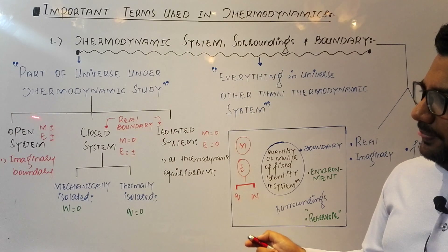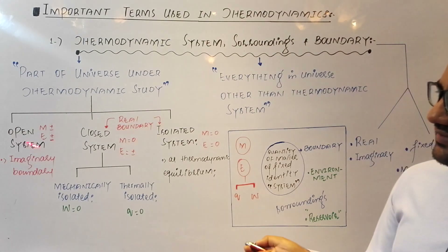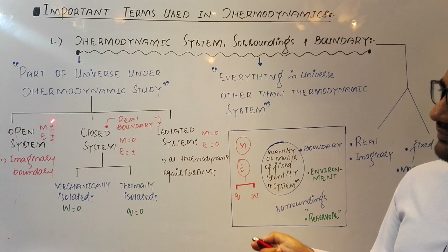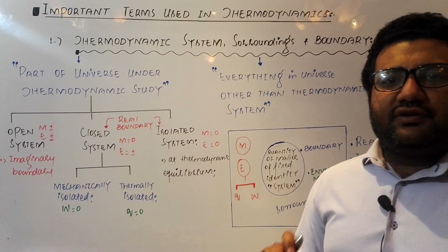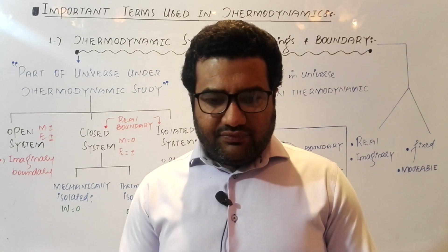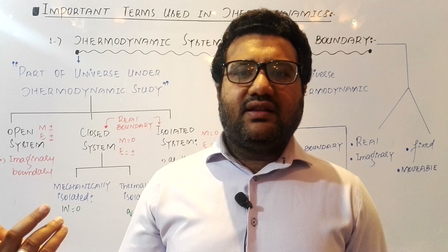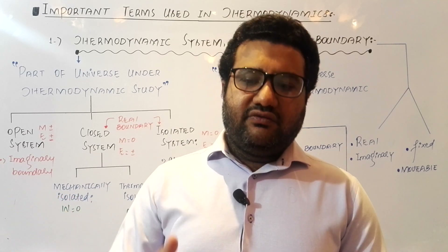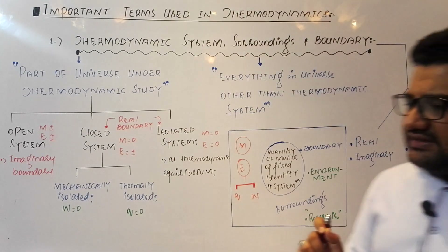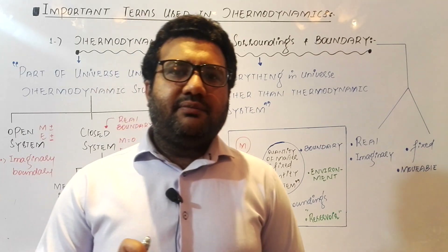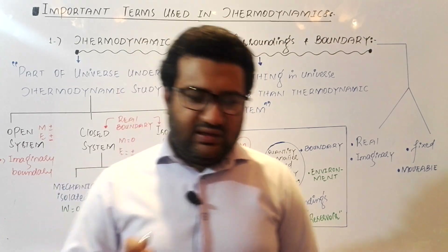The first category is the open system. In an open system, you will most often observe an imaginary boundary. In an open system, both matter (M) and energy (E) are exchanged between the system and the surroundings. For example, a cup of tea produces vapors that move into the surroundings, and energy is exchanged from the hot tea to the cold surroundings in the form of heat. Open system can never be at thermodynamic equilibrium because matter and energy are continuously being exchanged with the surroundings.